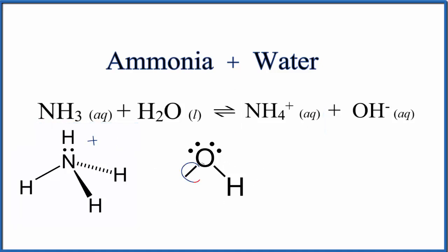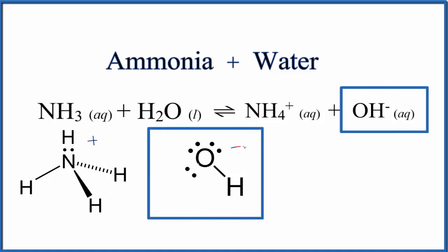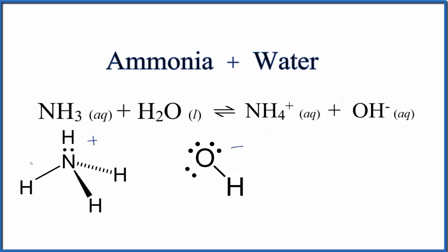Over here, this represents a pair of electrons as a lone pair. Now we have the hydroxide ion. We've lost the positive and have a negative charge. This is our NH4 plus and this is our hydroxide ion.